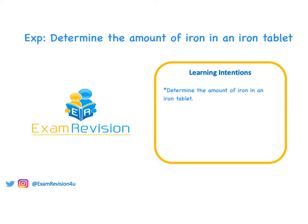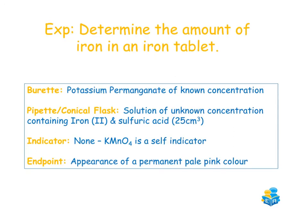In this video we're going to do another oxidation-reduction titration to determine the amount of iron present in an iron tablet. In our burette we have potassium permanganate of known concentration, and pipetted into our conical flask is a solution of unknown concentration containing iron tablets — iron(II) sulfate and sulfuric acid in excess. There is no indicator here because KMnO4 is a self-indicator.